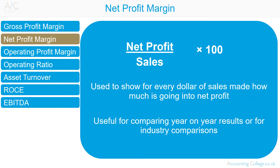Net profit margin, also known as operating profit margin, is net profit divided by sales. Net profit is sales less cost of sales and all other expenses. Net profit margin is used to show for every dollar of sales made by an organisation, how much is going into net profit. Net profit margin, like gross profit margin, is useful for comparing year-on-year results, for comparisons with competitors of different sizes and to industry standards.